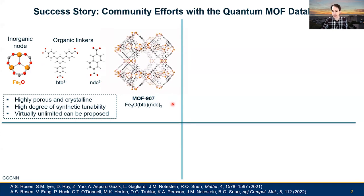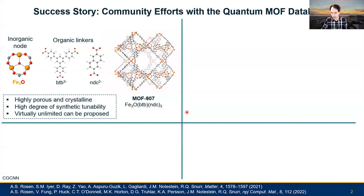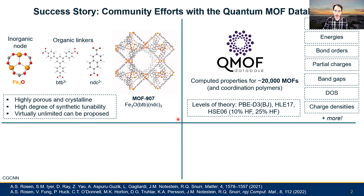That's why people have gotten really interested in them, especially from the machine learning side. There are many metal organic frameworks and related materials that have been synthesized and virtually unlimited more that can be proposed. So naturally, what we did was construct a database that I'm calling the Quantum MOF, or QMOF, database, which contains computed quantum mechanical properties for about 20,000 of these metal organic frameworks and coordination polymers, which are just non-porous analogs of these metal organic framework structures. We have your typical host of geometric, electronic structure, and energetic properties, along with computed properties at multiple levels of theory.